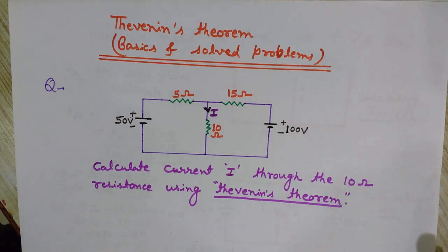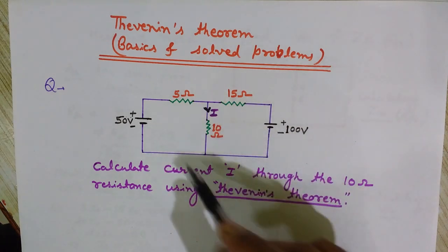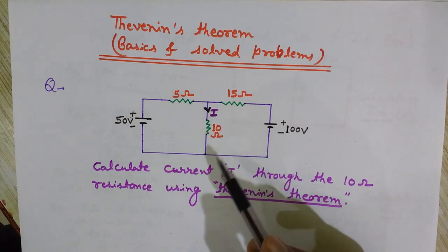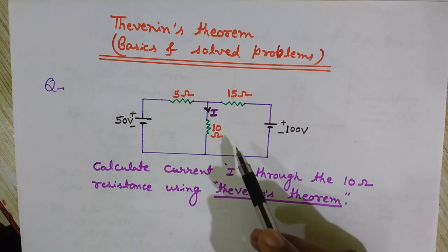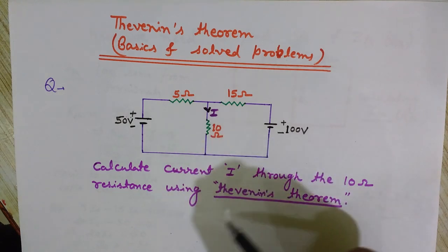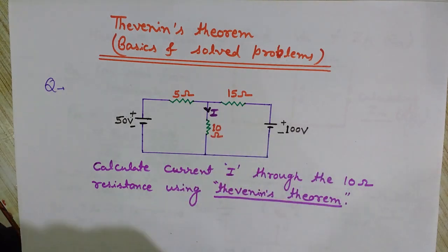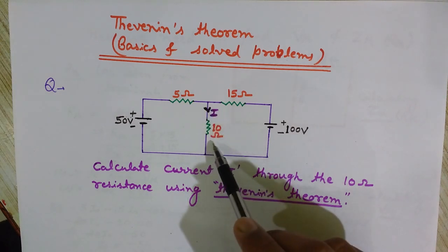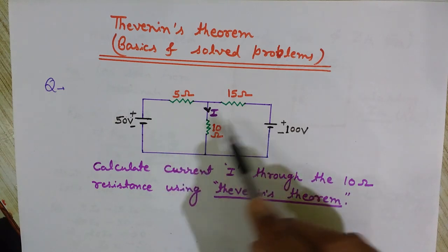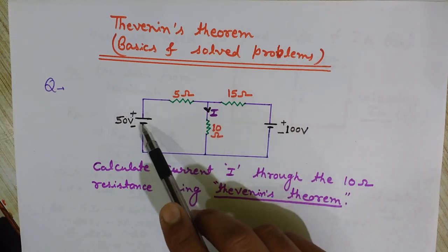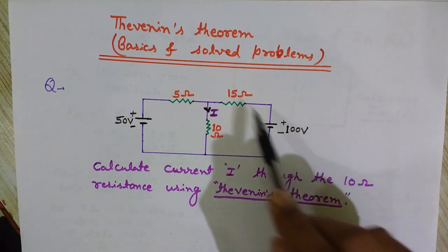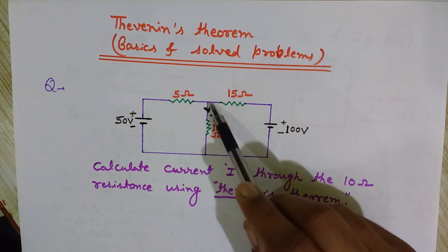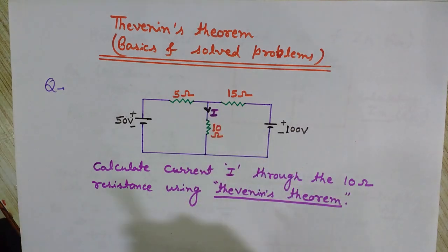Although we can solve this circuit by various methods like superposition theorem, KCL, KVL, or Norton's theorem, here we will solve this problem using only Thevenin's theorem. I want to find the current I flowing through this 10 ohm resistance. The circuit has a 50 volt voltage source, a 100 volt voltage source, and 5 ohm, 15 ohm, and 10 ohm resistances.